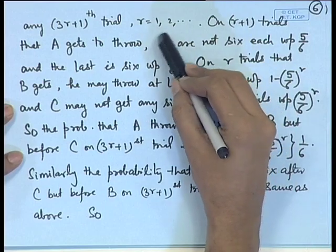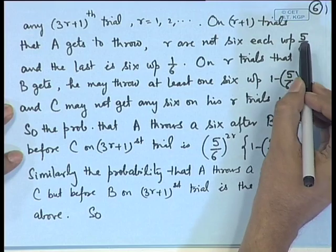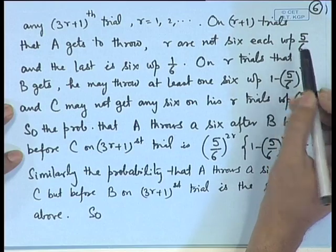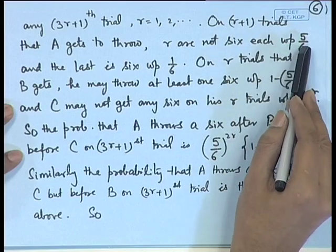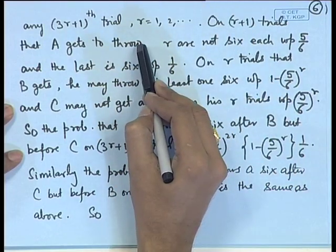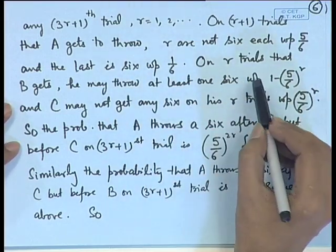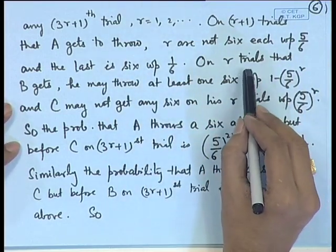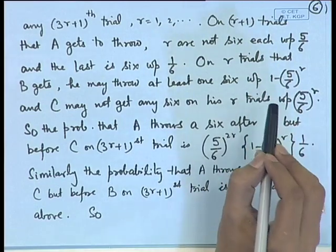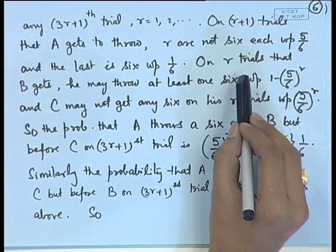So the probability that A gets no 6 in R trials is (5/6)^R, and on the (R+1)th trial he gets a 6 with probability 1/6. Out of the total 3R+1 trials, player B and player C each also get R trials to throw.